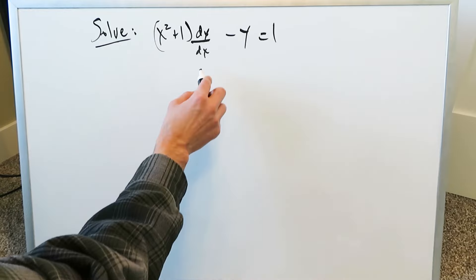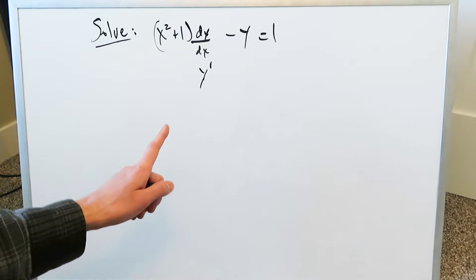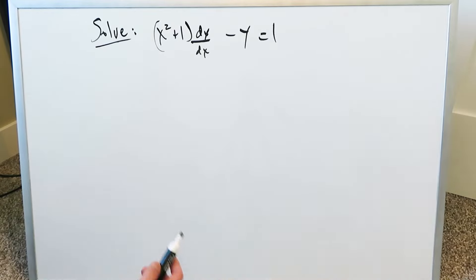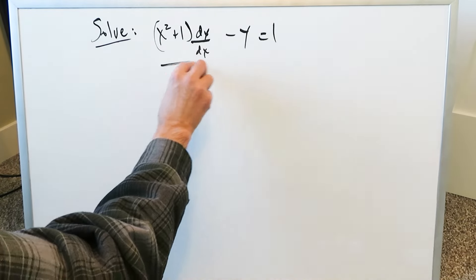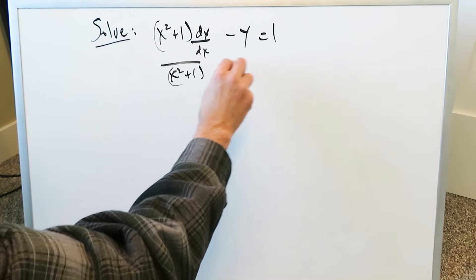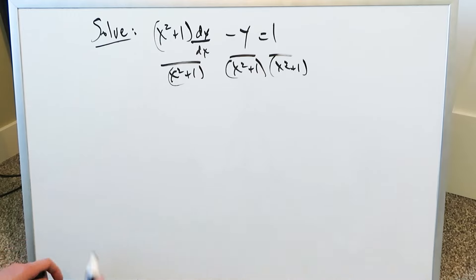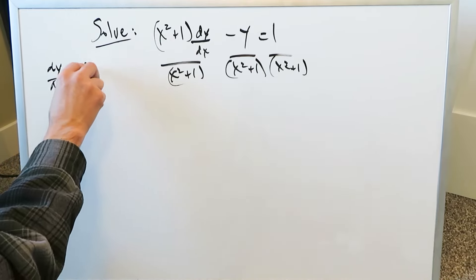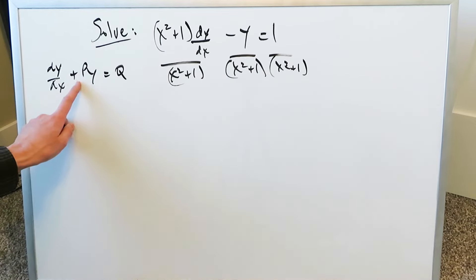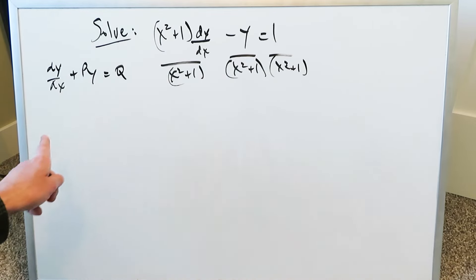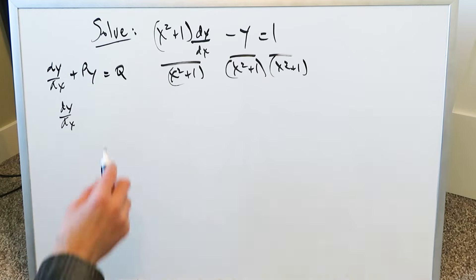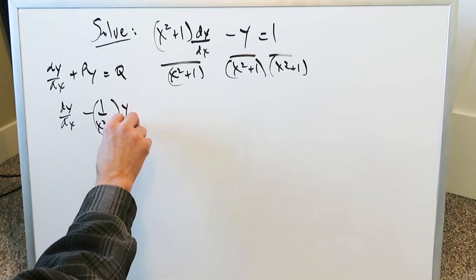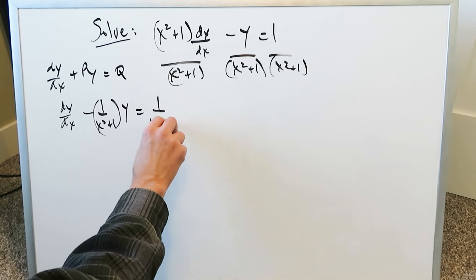Remember this question could have been written with y prime instead of dy/dx — in all instances y prime is the same thing. From here, divide everything by x squared plus 1 all the way across. When you divide everything by that you get it into the standard form dy/dx plus py equals q. Dividing gives dy/dx minus 1 over (x squared plus 1) times y is equal to 1 over (x squared plus 1).